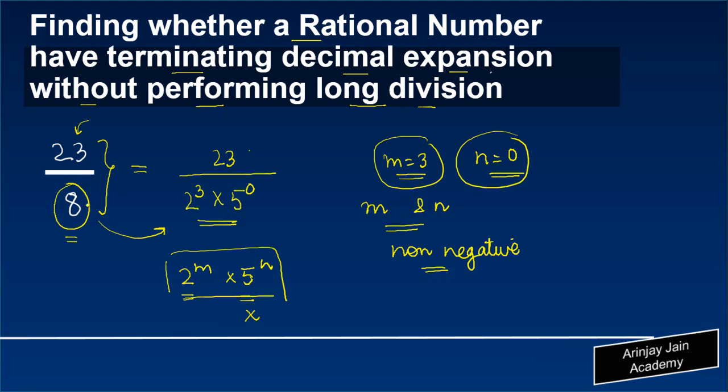So effectively what that means is that this will have a terminating decimal expansion. Should we try that? Let's say we have 23 upon 8: 8 times 2 gives you 16, 8 times 8 gives you 64, 8 times 7 gives you 56. Now there is a 0 as a remainder.